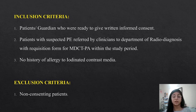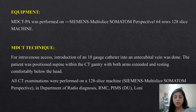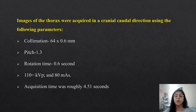The exclusion criteria was non-consenting patients. The study was performed on a Siemens multi-slice Somatom Perspective, 64 rows, 128 slice machine. An 18-gauge catheter was introduced into the antecubital vein for intravenous access. The patient was positioned supine within the CT gantry with both arms extended and resting comfortably below the head. Images of the thorax were acquired in a cranial-caudal direction using a collimation of 64 by 0.6 mm, pitch of 1.3, and rotation time of 0.6 seconds. Acquisition time was roughly 4.51 seconds.